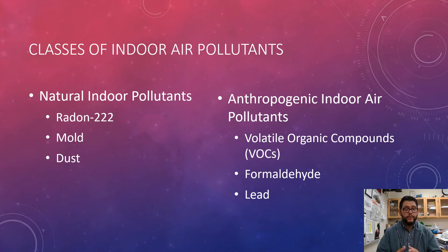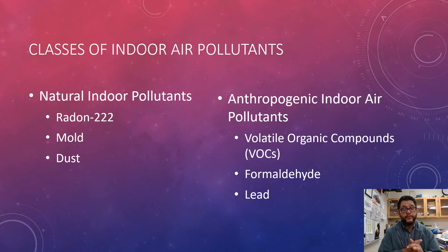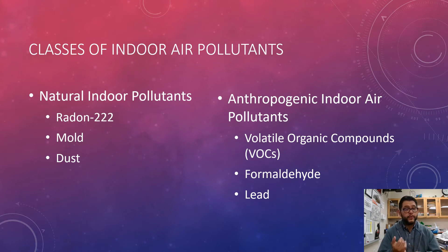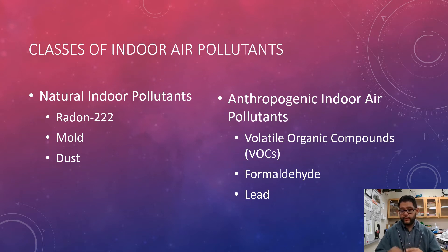Some natural indoor pollutants are going to be things like mold and dust, and then of course radon, which we'll focus on at the end. Some anthropogenic or human-caused ones are going to be your volatile organics, which we've mentioned before, formaldehyde, and lead, which can end up in some of our homes and resources.